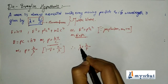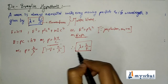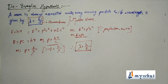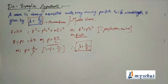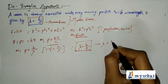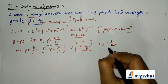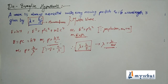Therefore lambda = h/p. That is the proof for the De Broglie wavelength formula. De Broglie assumed this relation holds for elementary particles like electrons, so for an electron of mass m and velocity v, the De Broglie wavelength is lambda = h/mv.